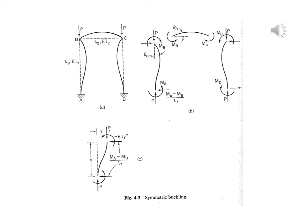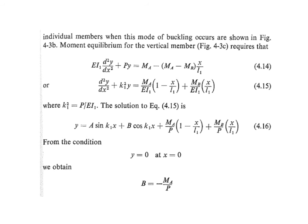We now determine the critical buckling load for the condition of sidesway prevented. The mode of buckling in this case is different. For the vertical member under this condition, the moment equilibrium equation is EI₁ d²y/dx² + Py = MA − (MA − MB)x/L₁. Bringing EI₁ to the denominator gives d²y/dx² + K₁²y = (MA/EI₁)(1 − x/L₁) + (MB/EI₁)(x/L₁). The solution is y = A sin(K₁x) + B cos(K₁x) + (MA/P)(1 − x/L₁) + (MB/P)(x/L₁).